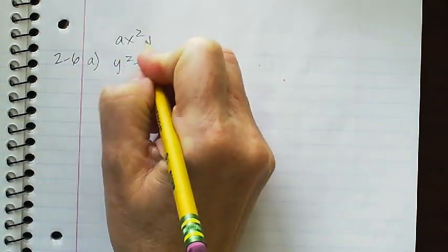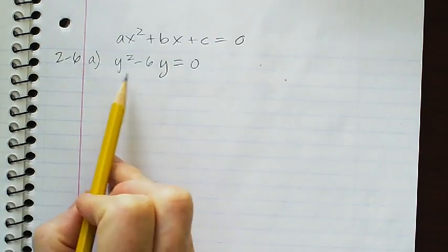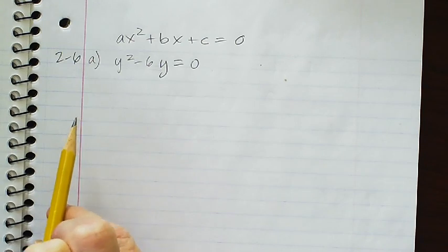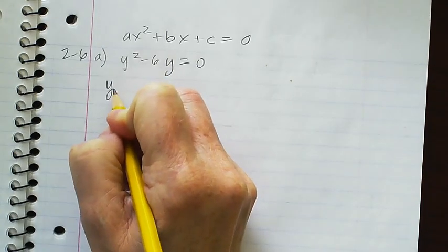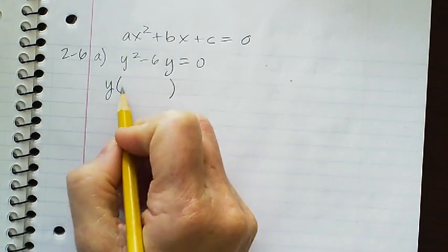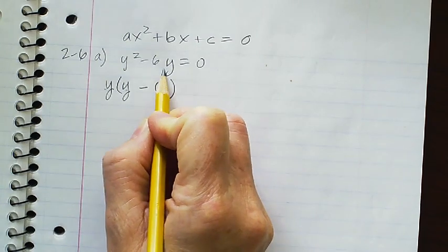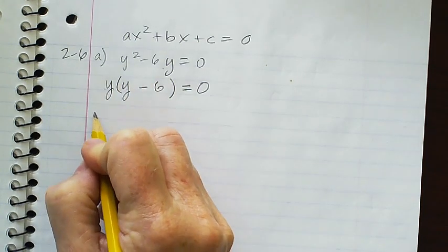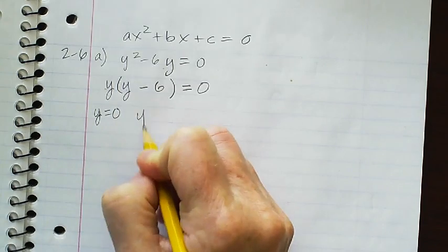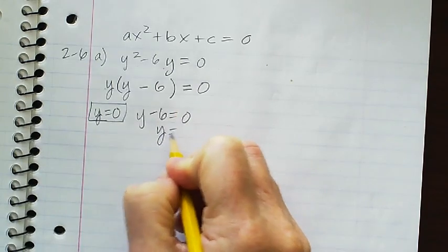This equation is in standard form, already set equal to zero. I've got a common factor of y, so I'm not going to factor it using the area model — I'm just going to factor out that common factor of y. y times y is y squared, and y times negative 6 is negative 6y. That gives me two terms that when multiplied give zero. Using zero product property, either y is zero or y minus 6 is zero, so your solutions are y equals 0 and y equals 6.